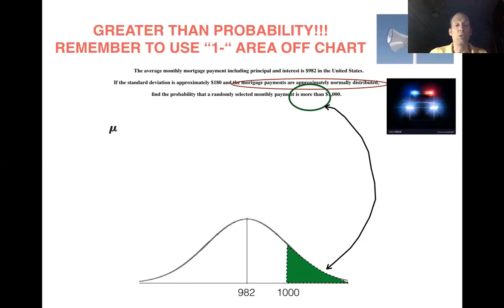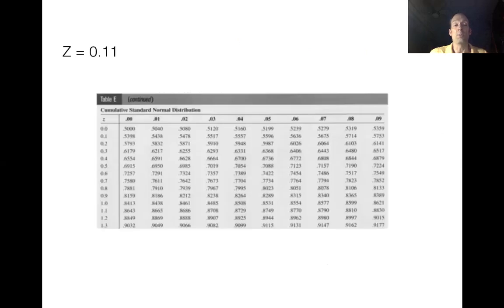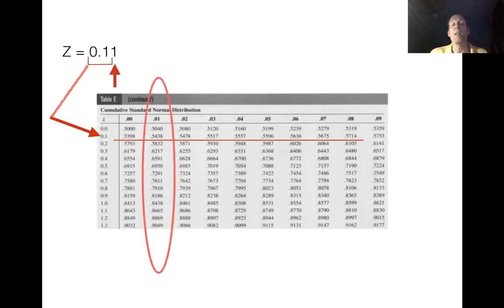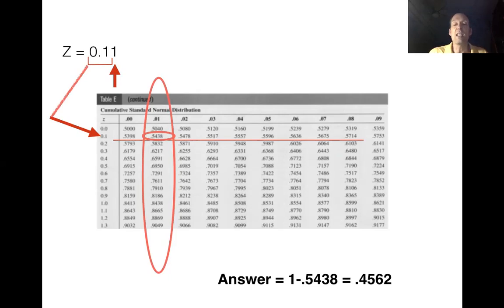Preparing the z score with mu = 982, sigma = some value, x = 1000, the z score comes out to 0.11. Looking up 0.11 in the positive z chart — finding the row for 0.1 and the column for 0.01 — the area is 0.5438. But since we need greater than, we do 1 − 0.5438 = 0.4562, or 45.62%. That is our final answer.